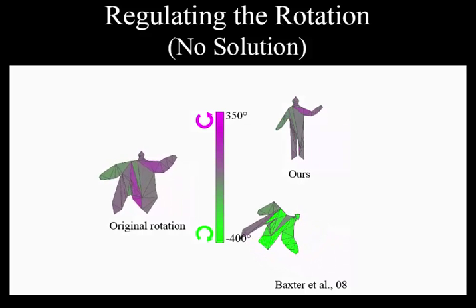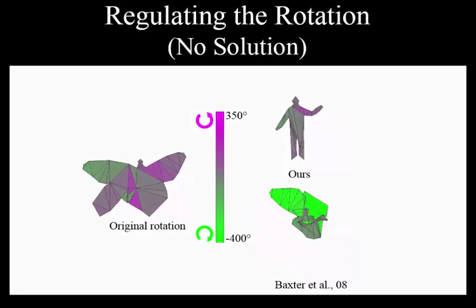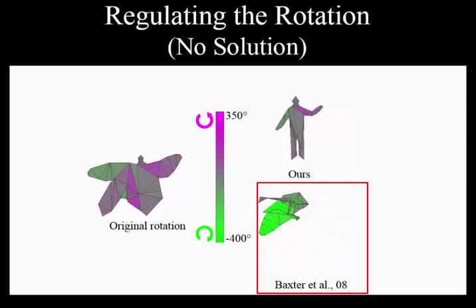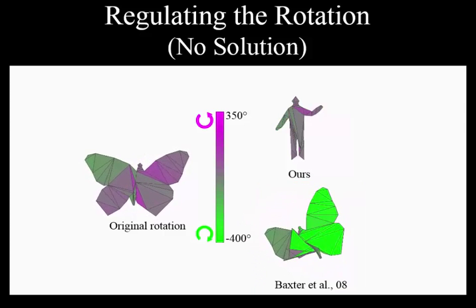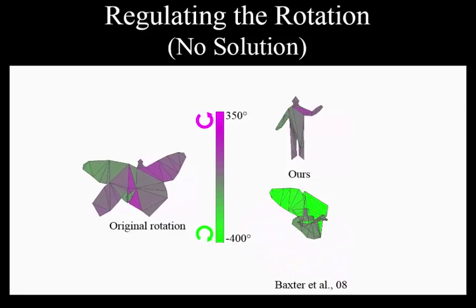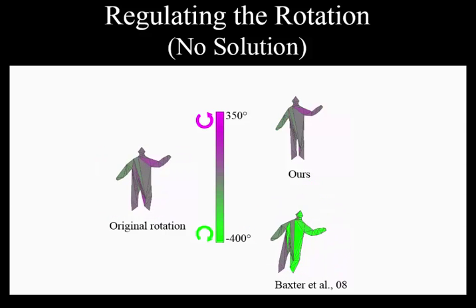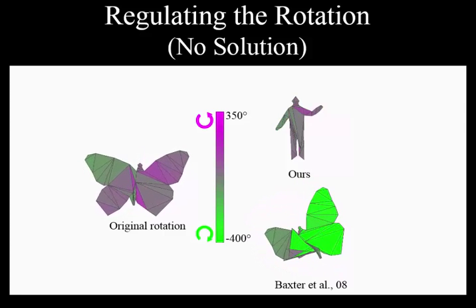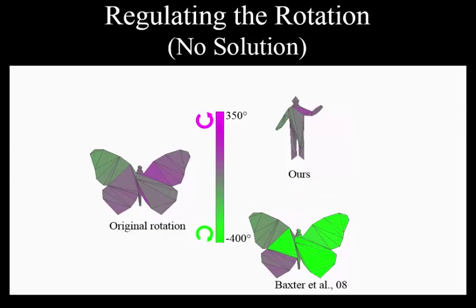However, if consistent assignment is not possible, existing methods such as Baxter et al. tend to create excess rotations which lead to undesired transformations. This is because in order to reduce the jump between adjacent rotations, their method tends to add excess rotations that lead to a big jump between the starting and ending rotation.